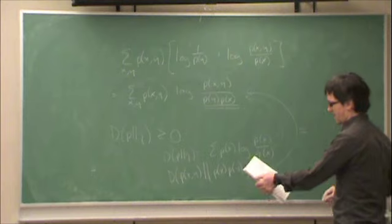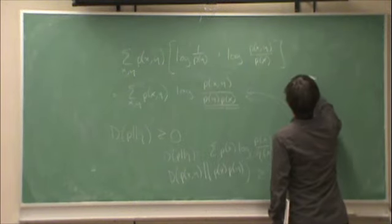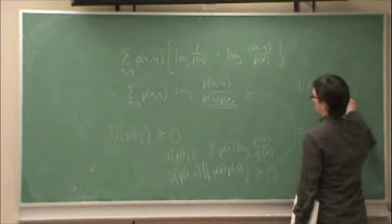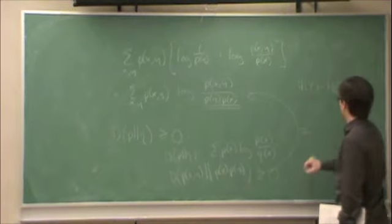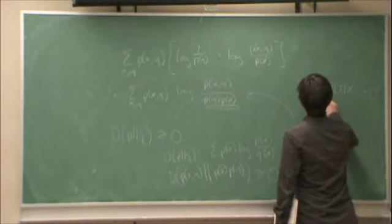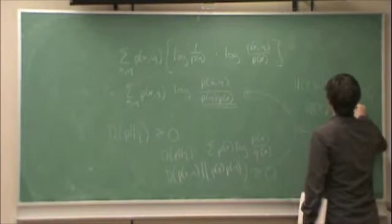So in the end, what I started with was h(y) minus h(y|x). I started with this and got here, and I know that this must be greater than or equal to zero. Therefore, h(y) is greater than or equal to h(y|x).